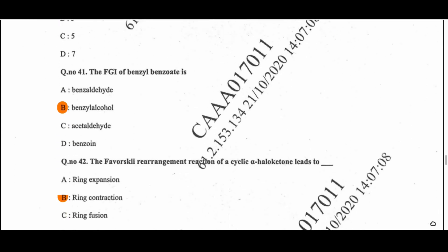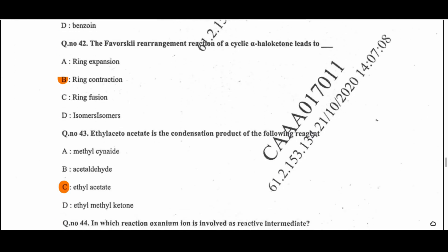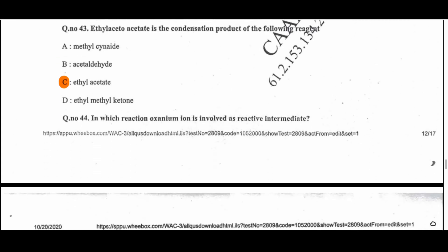Question 41: The FGI of benzyl benzoate is benzyl alcohol — option B. Question 42: The Fries rearrangement of a cyclic alpha-haloketone leads to a ring contraction product — the rearrangement gives a smaller ring product. Question 43: Ethyl acetoacetate is the condensation product of two molecules of ethyl acetate in the presence of a base.